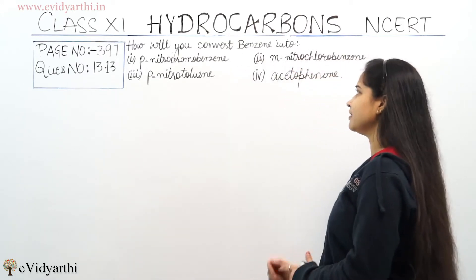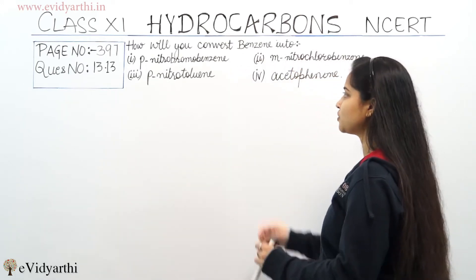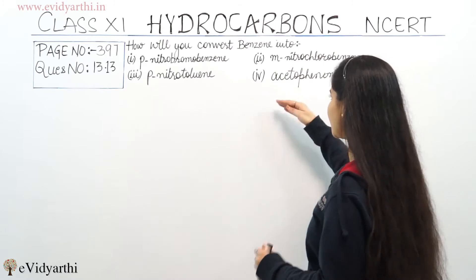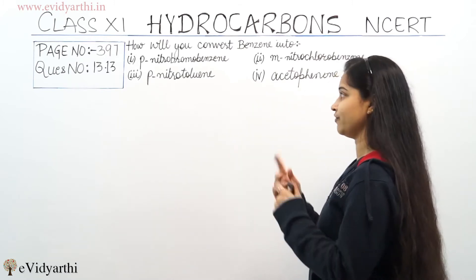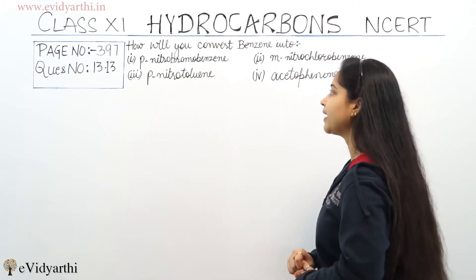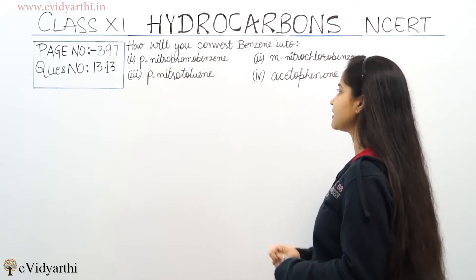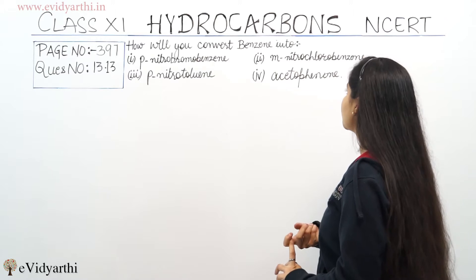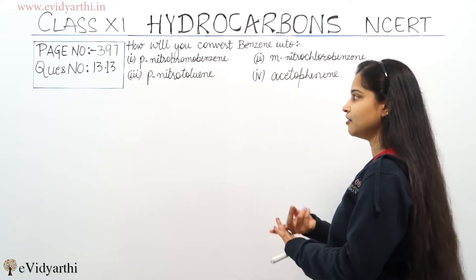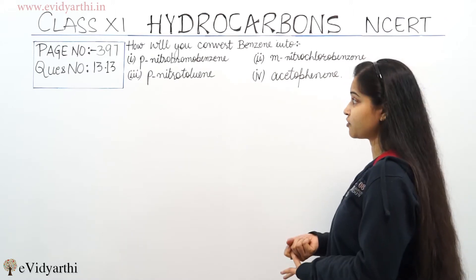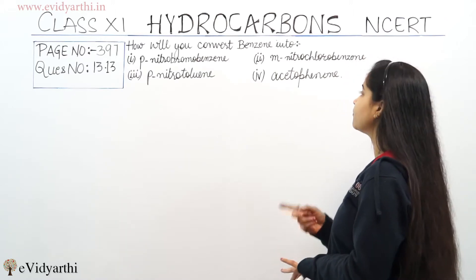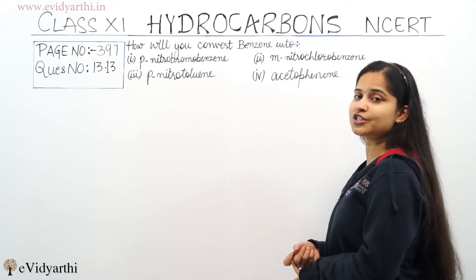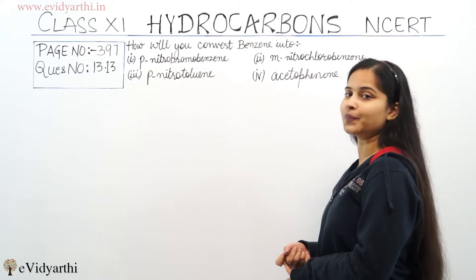The question is: how will you convert benzene into the following compounds? First, para-nitro-chloro-benzene. Second, meta-nitro-chloro-benzene. Third, para-nitro-toluene. And fourth, acetophenone.